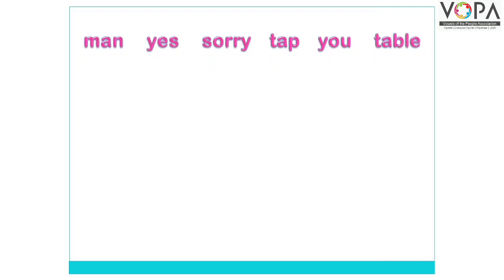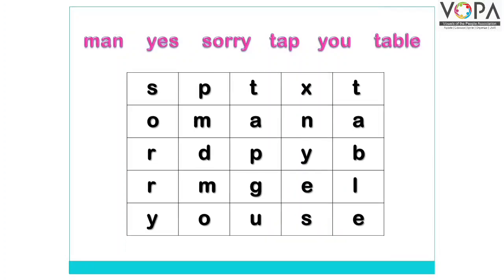The words are: Man, Yes, Sorry, Tap, You, And, Table. प्यारे बच्चों, आप देख रहे होंगे यहाँ पर आपको कुछ words दिये गए हैं। इन words को आपको इस grid में तलाश करना है। जैसे पहला word है हमारा Man — Man की spelling है M-A-N।